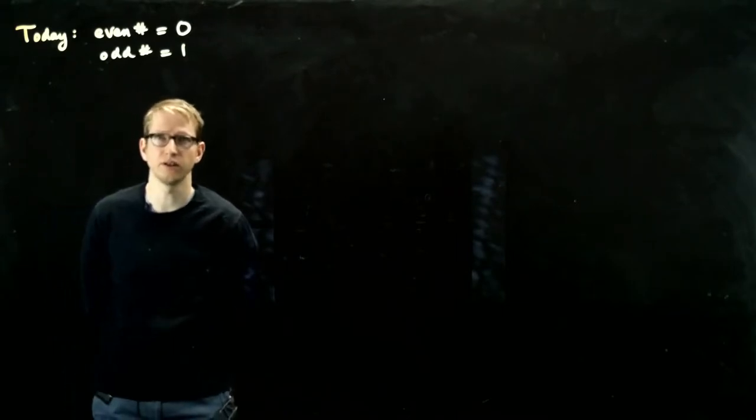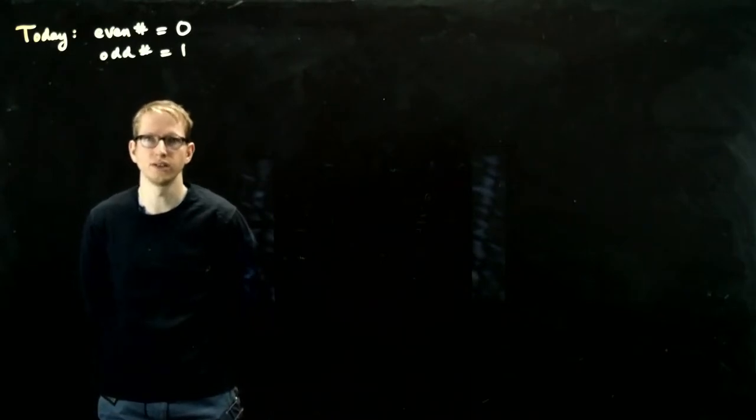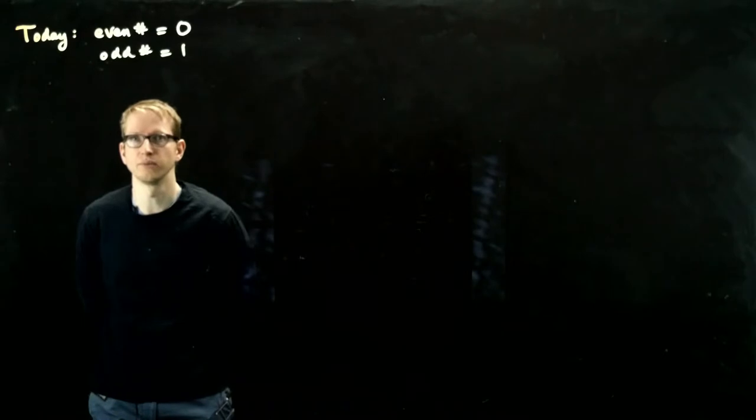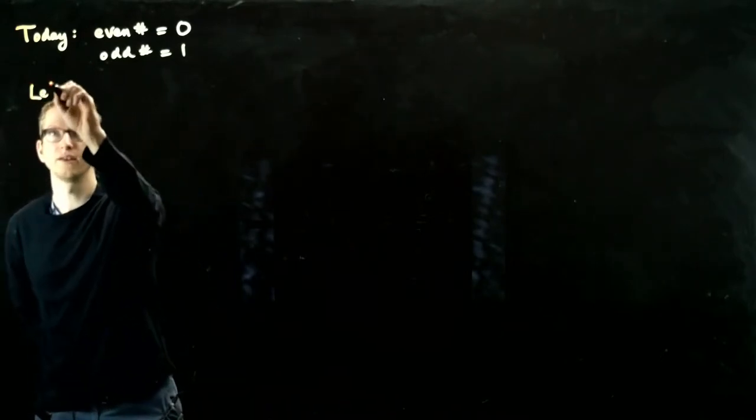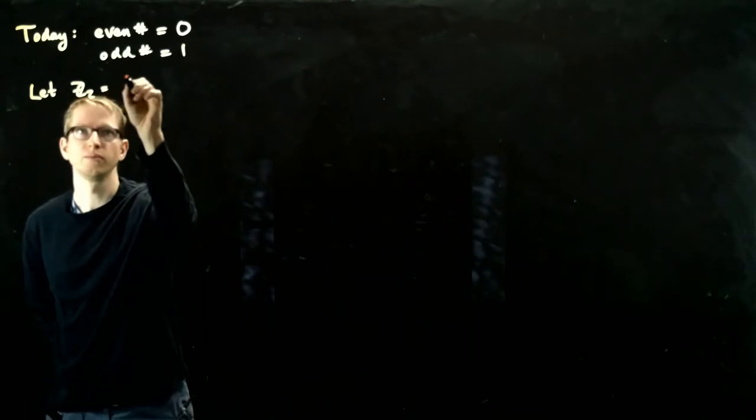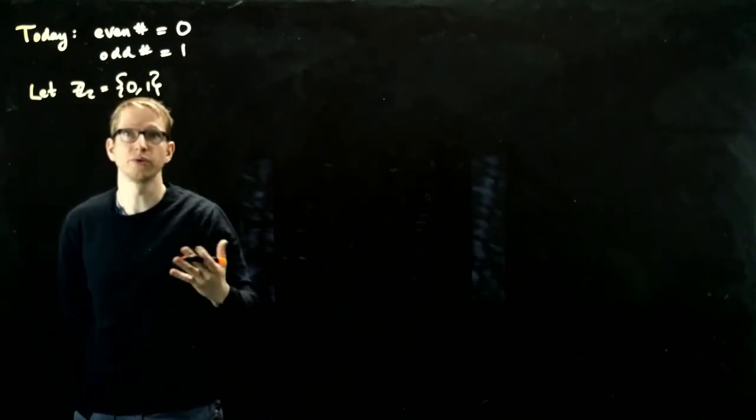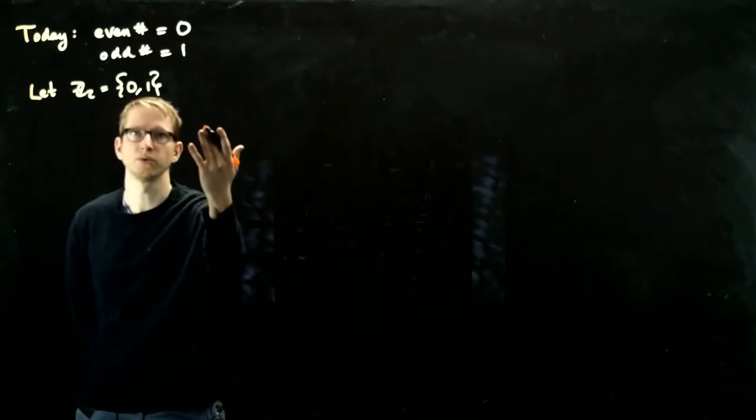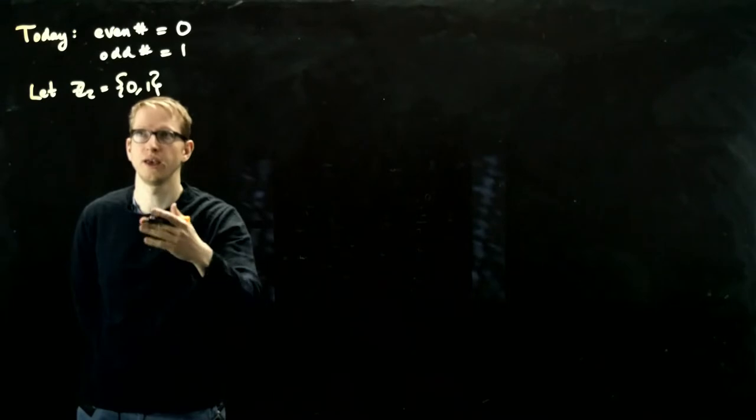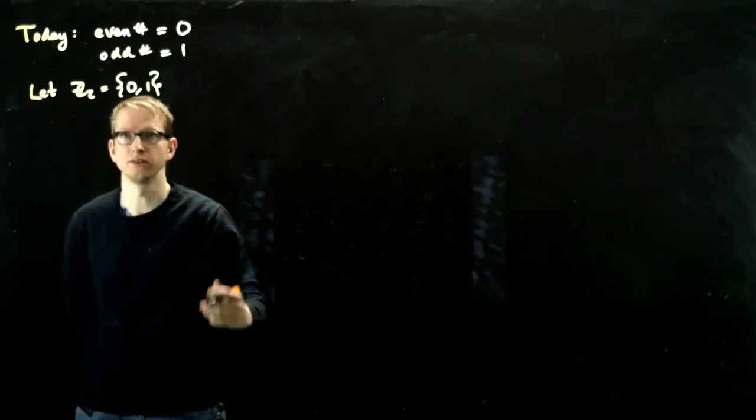There are multiple reasons for this, one of which is simplicity, the other of which is that it's related to computer science. So we're going to let Z mod 2 be exactly those numbers, with the arithmetic that I just said: 0 plus 0 is 0, 0 plus 1 is 1, 1 plus 1 is 2, which is 0, and then multiplication similarly. 0 times 1 is 0, and 1 times 1 is 1.